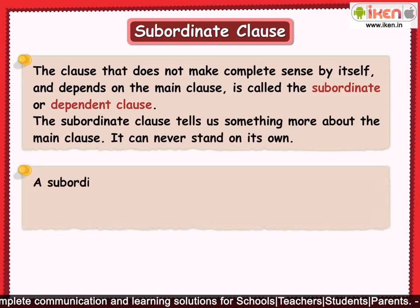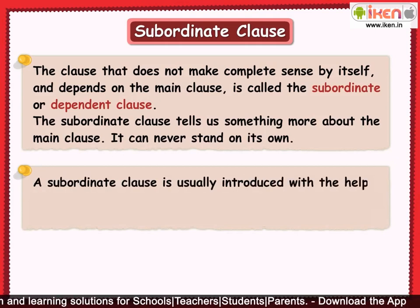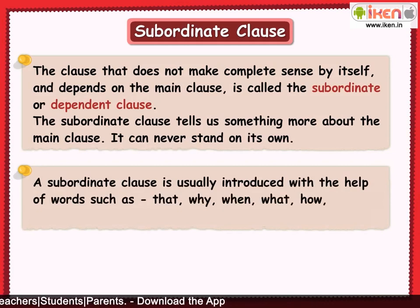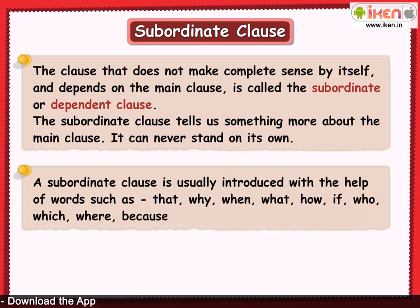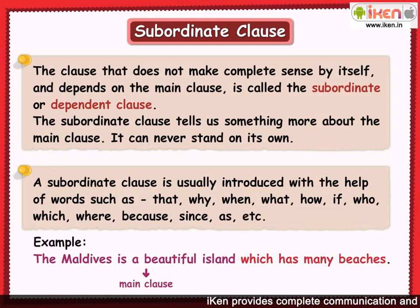A subordinate clause is usually introduced with the help of words such as: that, why, when, what, how, if, who, which, where, because, since, as, etc. In our earlier example, the first clause is called the main clause and the second clause is called the subordinate clause.